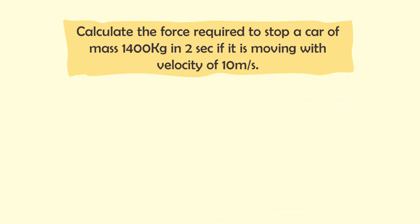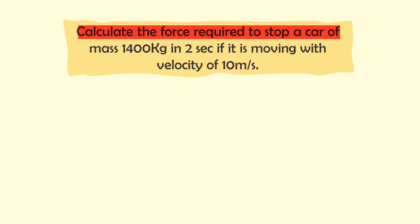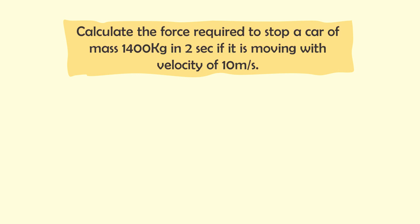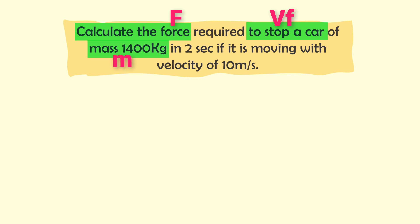The third problem is: calculate the force required to stop a car of mass 1400 kg in two seconds if it is moving with a velocity of 10 meters per second. The given data: we must find force F; to stop the car means final velocity VF is zero; mass M is 1400 kg; time T is 2 seconds; and initial velocity VI is 10 meters per second.